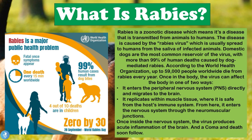So what is rabies? Rabies is a zoonotic disease, which means it's a disease that is transmitted from animals to humans. The disease is caused by the rabies virus, which is usually spread to humans from the saliva of infected animals. Domestic dogs are the most common reservoir of the virus, with more than 99% of human deaths caused by dog-mediated rabies. According to the WHO, up to 59,000 people worldwide die from rabies every year.